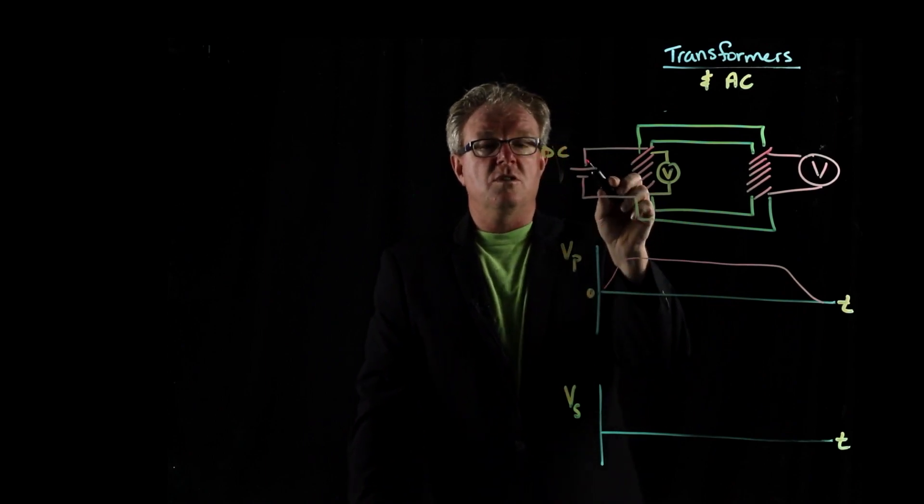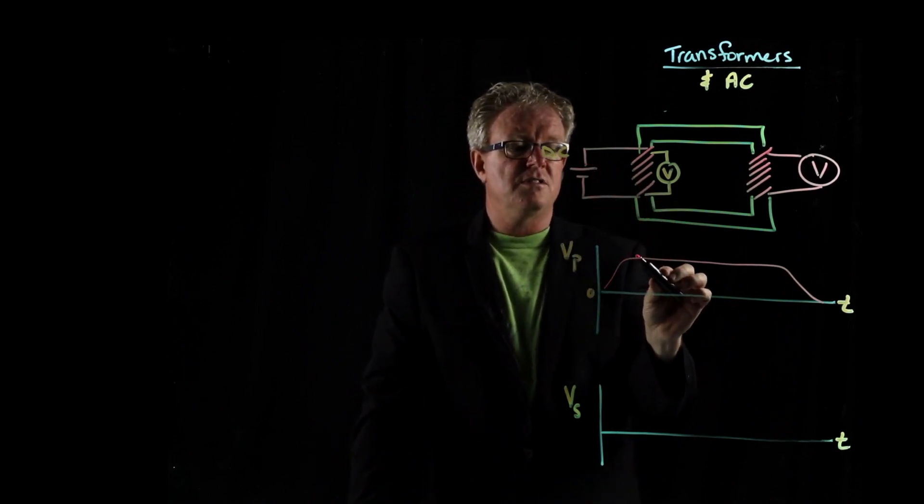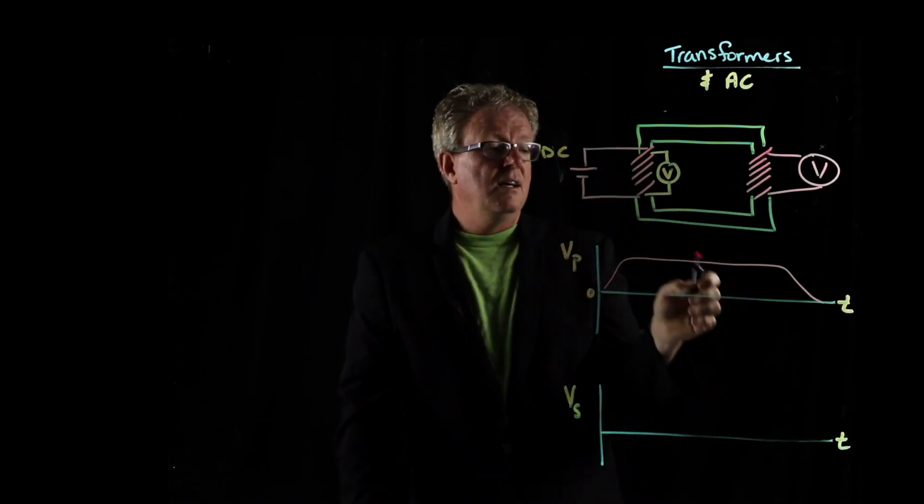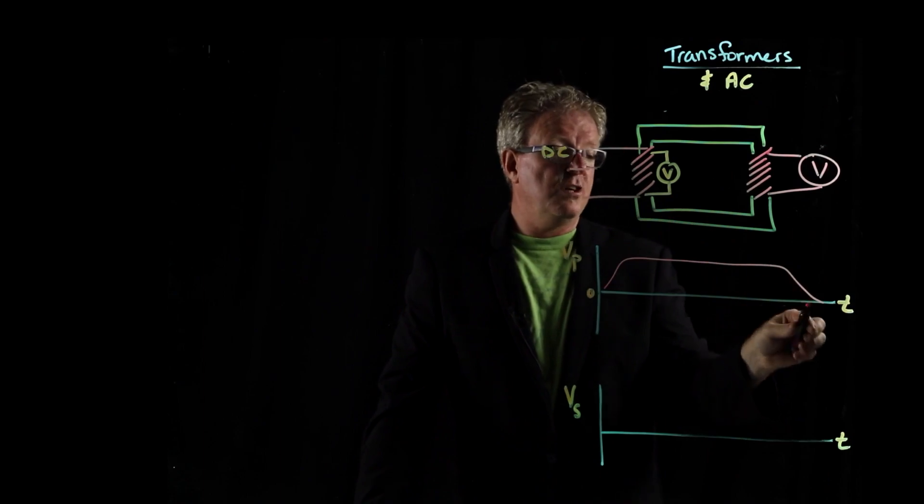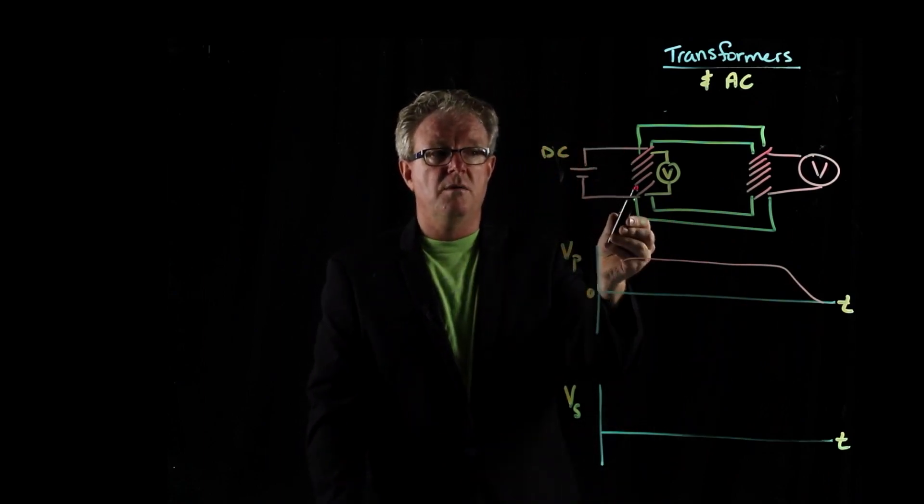There's a voltage difference, electrical potential difference between the positive and negative terminals. And that difference is going to be occurring as long as the circuit is complete. And then when you turn the circuit off, it goes down. So that's what the voltage per time graph would look for our primary coil.